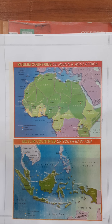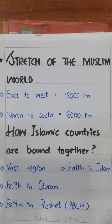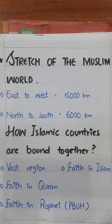Now, the stretch of the Muslim world — where it is and how vast it is. The Muslim world stretches about 15,000 km from east to west and 6,000 km from north to south. This is a vast region. Islamic countries are spread within this vast region.